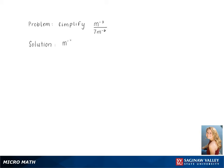To simplify the problem m to the negative 3 over 7m to the negative 6, we leave 1/7 out front and subtract the exponents of m using the formula below. This gives us 1/7 m to the 3rd, which gives us m to the 3rd over 7 as a final answer.